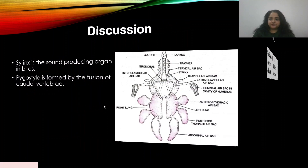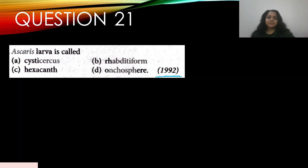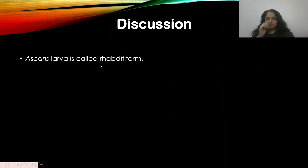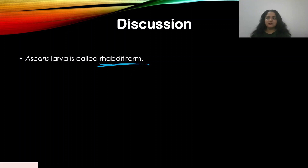Question number twenty-one: Ascaris larva is called — appeared in 1992 — A) cysticercus, B) rhabditiform, C) hexacanth, D) oncosphere. The answer is B — rhabditiform. The rhabditiform larva is the larval stage seen in Ascaris. This was covered in the life cycle of Ascaris discussed in previous parts.